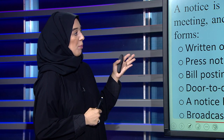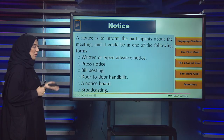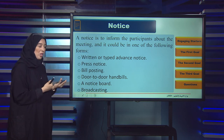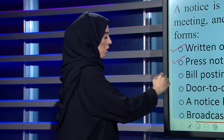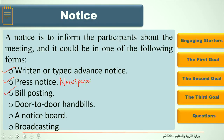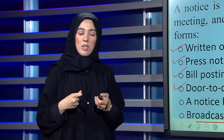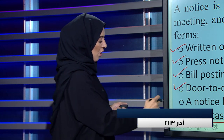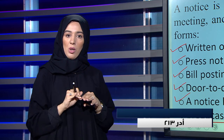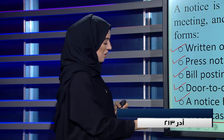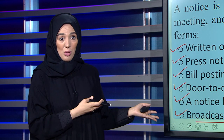A notice is used to inform participants about the meeting, and it can be sent in one of the following forms: written — typed and sent directly; through press, meaning the newspaper; by bill posting through the post office; door-to-door handbills, where the postman delivers the notice directly to their company; by notice board, which can be used inside the company so employees know about the meeting; and finally through broadcasting.